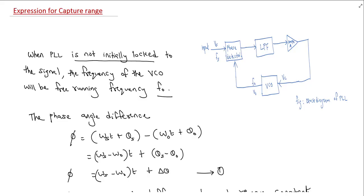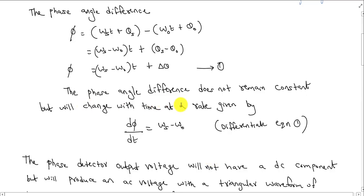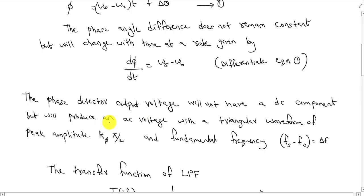We can say the phase angle difference does not remain constant, but it will change with time at the rate given by d-phi/dt. We measure that value as equal to omega_s minus omega_0. So the phase angle difference does not remain constant — that is the first derivative, the rate of change of phase. Then the phase detector output voltage will not have a DC component but will have an AC component.